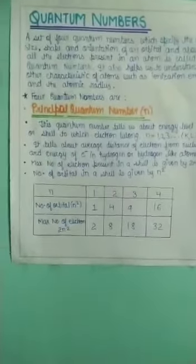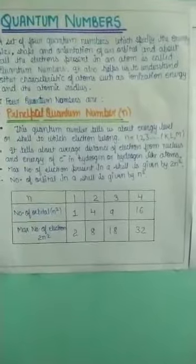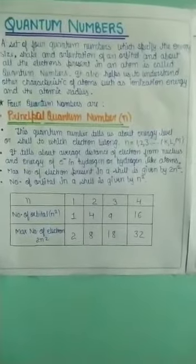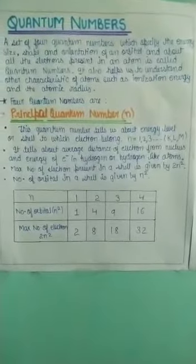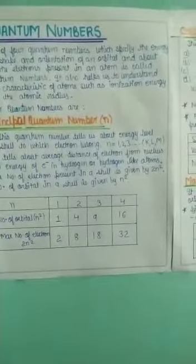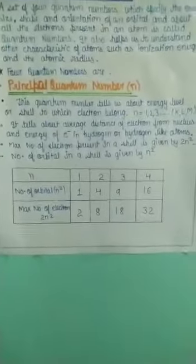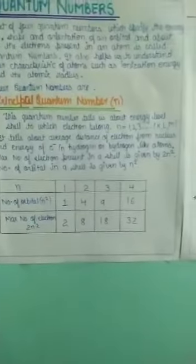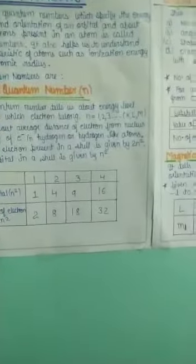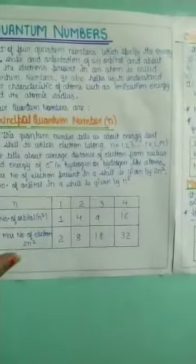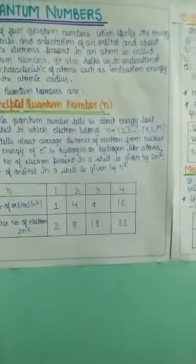This average distance is the average distance of the electron from the nucleus, and also the energy of the electron in hydrogen and hydrogen-like atoms. The maximum number of electrons which can be present in a shell is given by 2n².